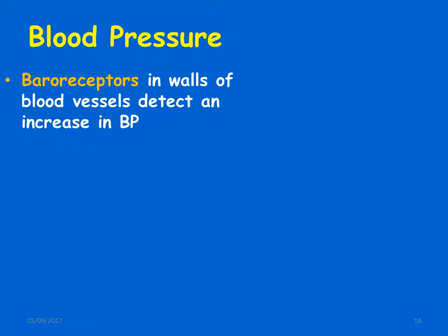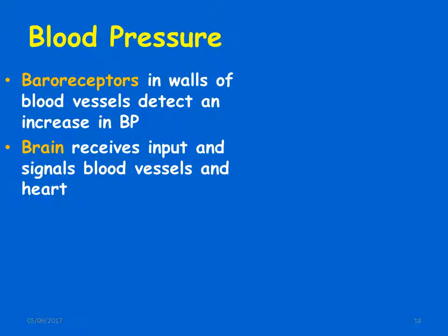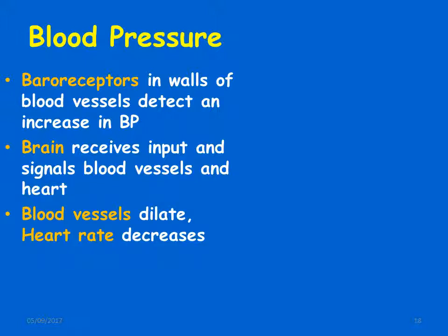An example of negative feedback is blood pressure regulation. Baroreceptors in the walls of blood vessels detect an increase in blood pressure. This information is carried to the brain, which receives signals from the blood vessels and heart. The brain integrates this information and sends signals via efferent nerves to blood vessels, causing dilation, and to the heart, decreasing heart rate — the overall effect is a decrease in blood pressure.